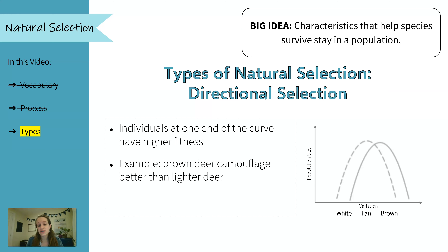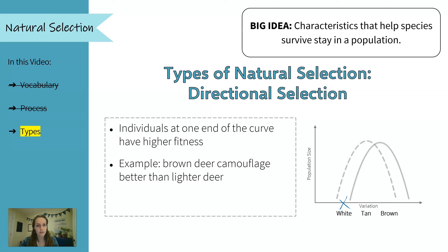So our initial population had some white deer, some tan deer, and some brown deer. The white deer were least likely to survive because they were least able to camouflage — predators would have come and picked them out first. Then tan deer, light tan, were probably less likely to survive, a little bit darker tan maybe. And then brown deer were most likely to survive.